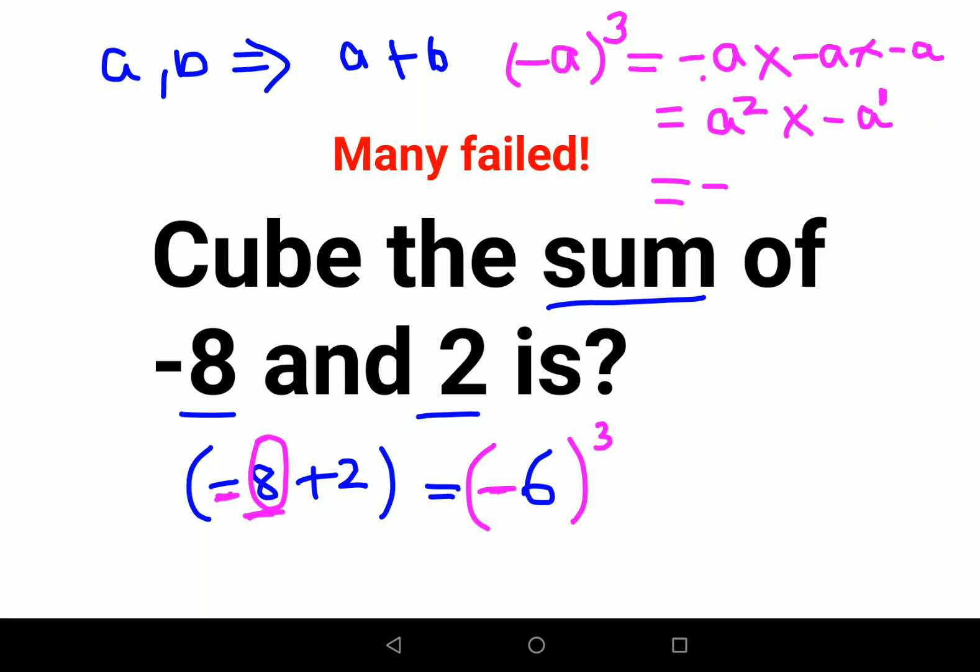Here because there is no index, we will take it as 1. So finally when the bases are same, the indices get added. So you have minus a cube.